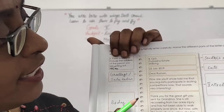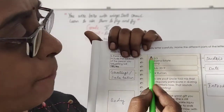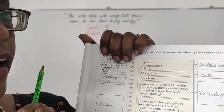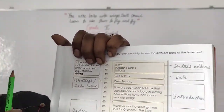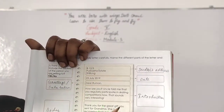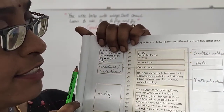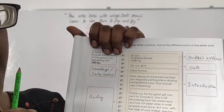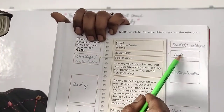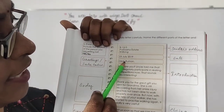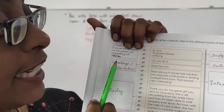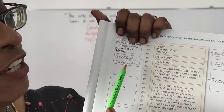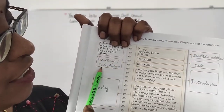The sender's address is written here — for example, B-12/3, Purbasha Estate, Shillong. Then the date is mentioned: 23 July 2019. After that, 'Dear Ruman' — this is the greeting or salutation.